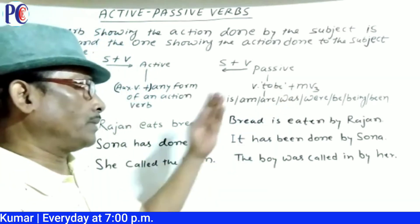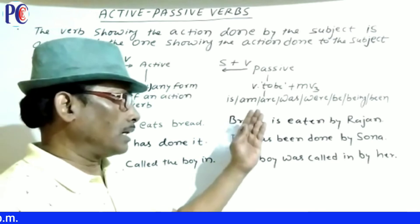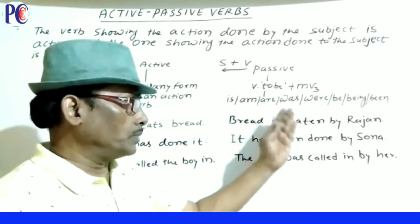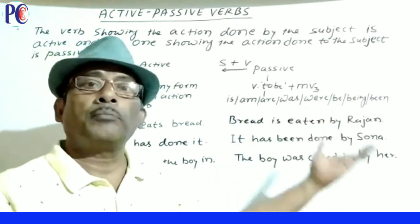Your verb-to-be forms are: am, are, was, were, be, being.